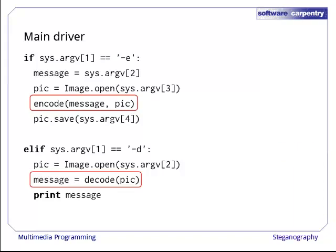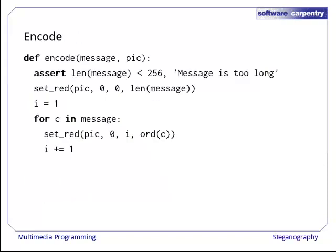The real work is done by these two functions, encode and decode. Let's write encode first. Its arguments are the message to hide, which is a string, and the picture to hide it in.